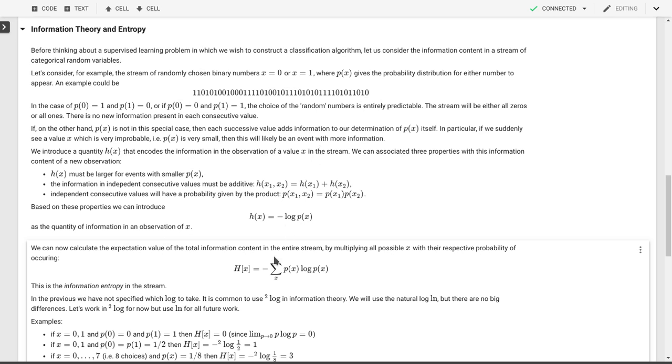Now we can calculate what is the average value or the expectation value of the information content for each of those bits, for each of those numbers as they arrive. So how do we calculate that? Well, we just take the sum over all of the possible values of our information content, little h of x, and we multiply it with our probability. So that gives us the average value. If the probability is a half for zero and a half for one, then it will just be the average of the little h for zero and the little h for one.